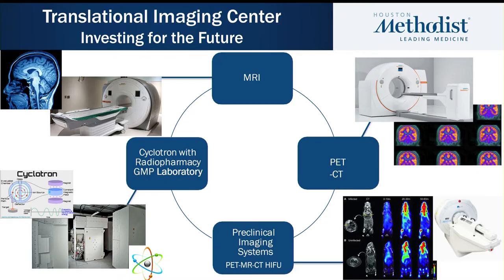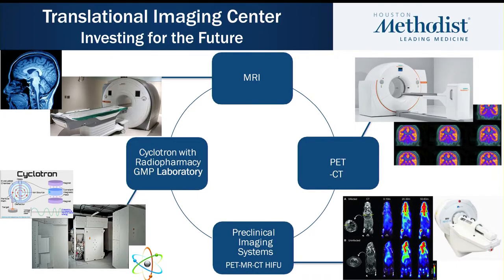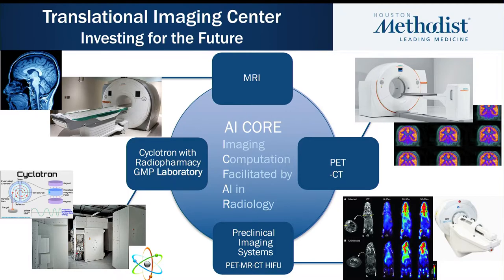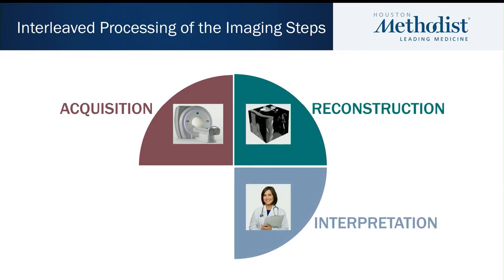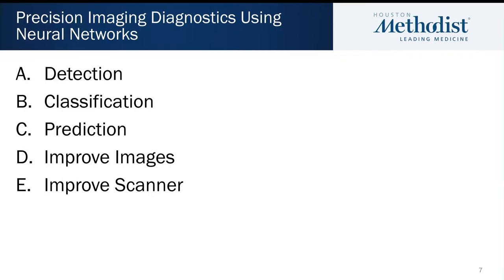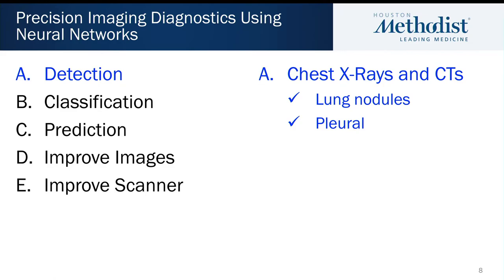At Houston Methodist, we have the Translational Imaging Center within our department, with cores driving science in MRI, molecular preclinical, and the cyclotron GMP — and now with a new core being developed on AI. Today I'll touch at a high level on acquisition, image reconstruction, interpretation, and analysis. In this order, I'll review detection, classification, prediction, image improvement, and scanner improvement as major domains of focus.